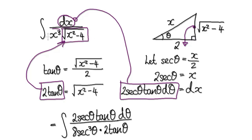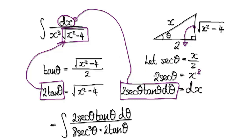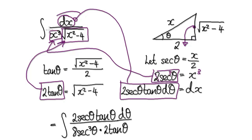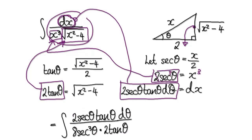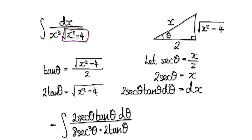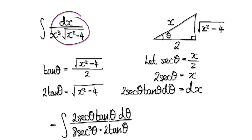And then we need x to the power of 3. x to the power of 3 means 2 times 2 times 2, so that would be 8 secant to the power of 3. We can put 8 secant cubed in here. So this whole thing here will then become this, because dx is 2 secant theta tan theta d-theta, and this thing here is 2 tan theta, which is to the power of 3.